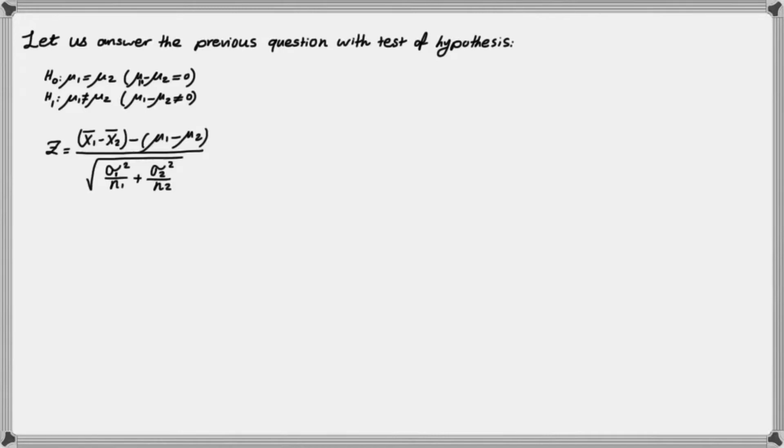So I have to calculate the z statistic with the difference that this part is my hypothesized difference. So this part comes from sample or population, this part comes from your hypothesis.